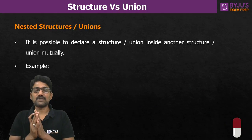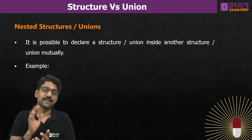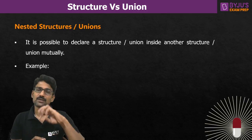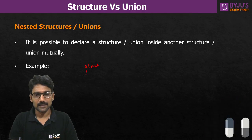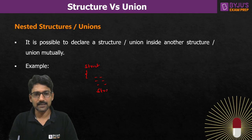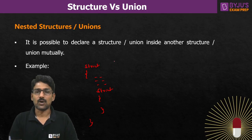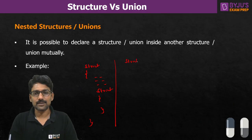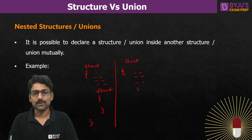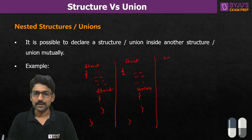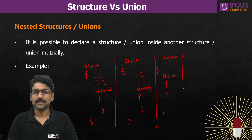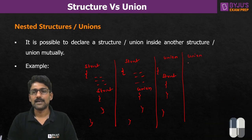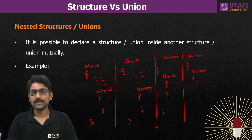It is definitely possible to create a structure inside a structure, a union inside a structure, a structure inside a union, or a union inside a union. For example, inside one structure you can have another structure as a member, or a union as a member. Inside a union you can have a structure as a member, or another union as a member, and this nesting can continue.